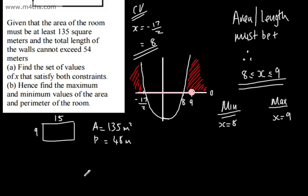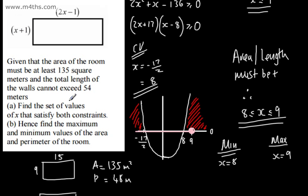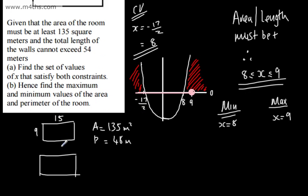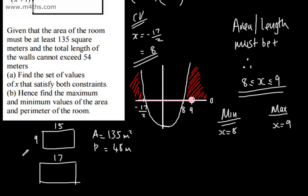Now if we consider the max, when we have x equals 9, 2 times 9, that's going to give me 17. And this is going to give me 9 plus 1, which is 10. So the area is going to be equal to 170 meters squared. The total length can't exceed 54, so the perimeter maximum is 54.